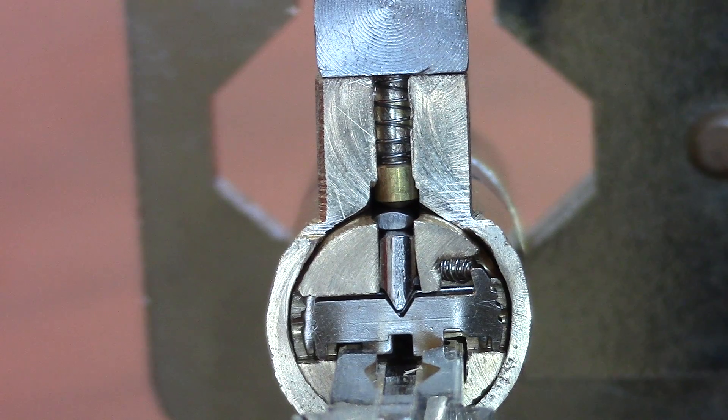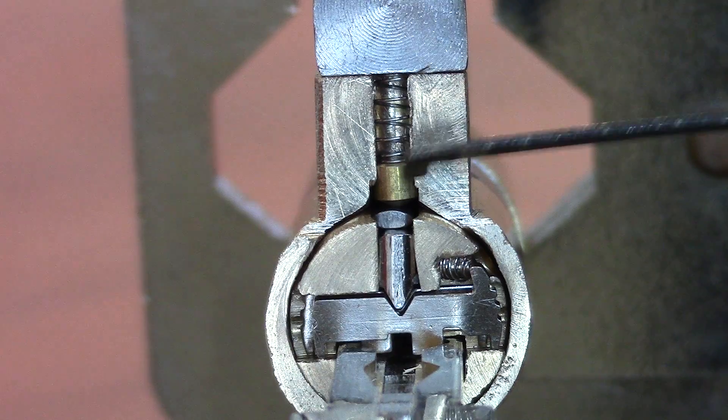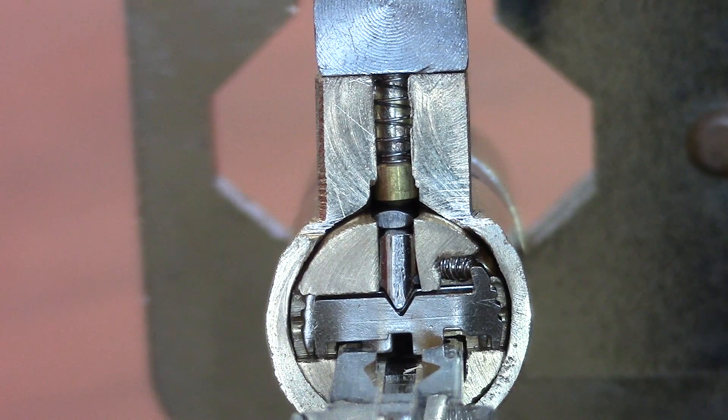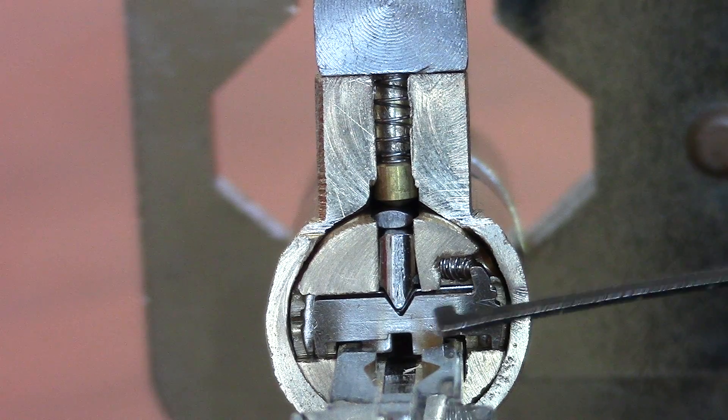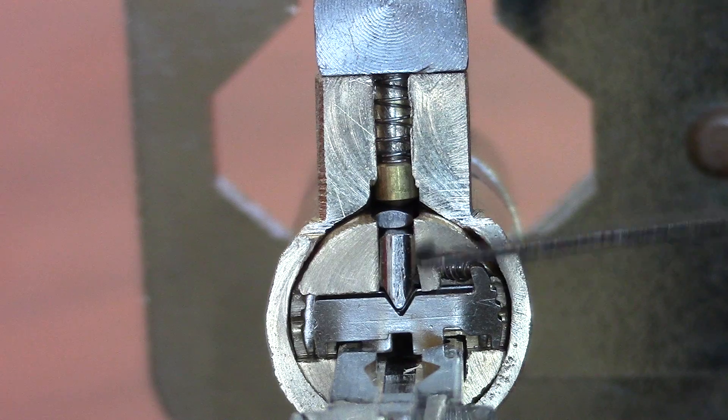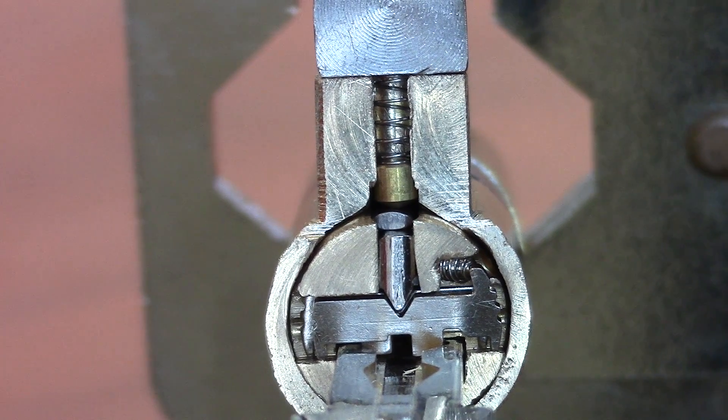This is what the lock looks like when the correct key is inserted. Here you can see the spring and the cap and the external sidebar and the internal sidebar. Since the wafers are now all in line and allow the inner sidebar to sink in a little bit deeper, the external sidebar can also sink into the plug.